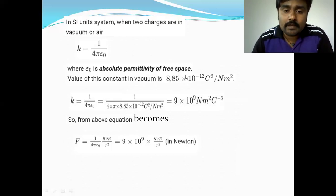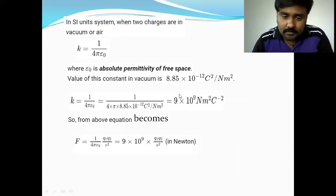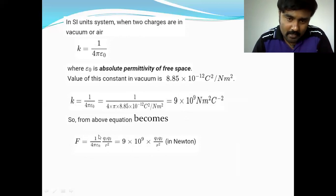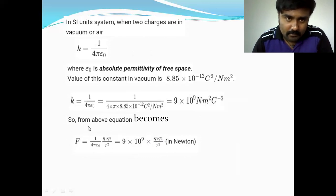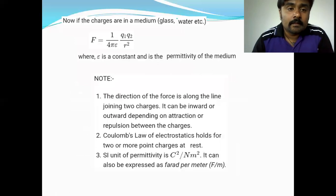Substituting the value of epsilon-naught, after simplification we get 1 divided by 4π epsilon-naught equals 9 × 10⁹. So the final equation becomes F = (1 / 4π epsilon-naught) × Q1 Q2 / r², where 1 / 4π epsilon-naught = 9 × 10⁹, and force is measured in Newtons. This is the mathematical expression for Coulomb's force when two charges are placed in vacuum or free space.